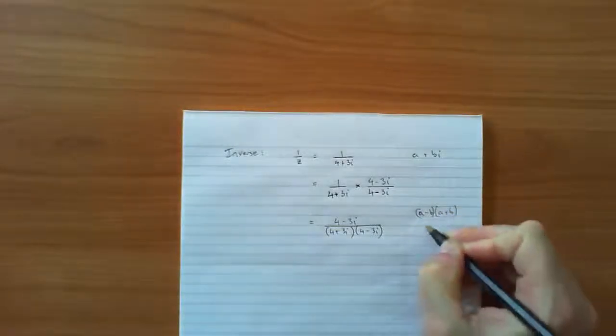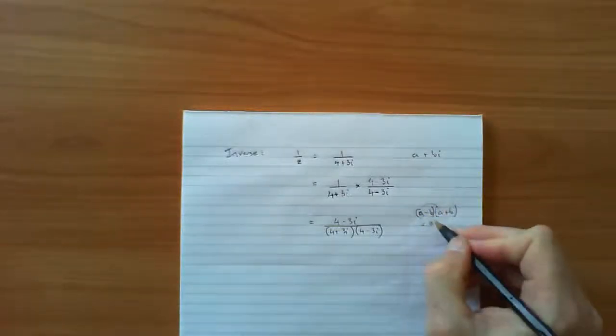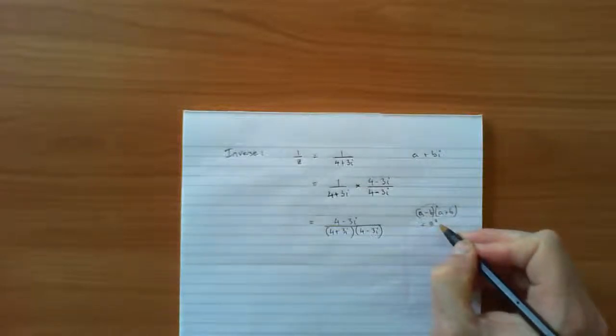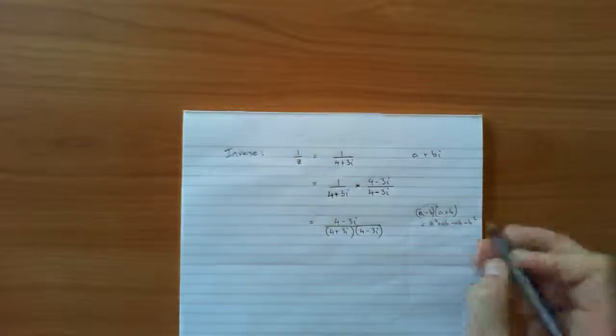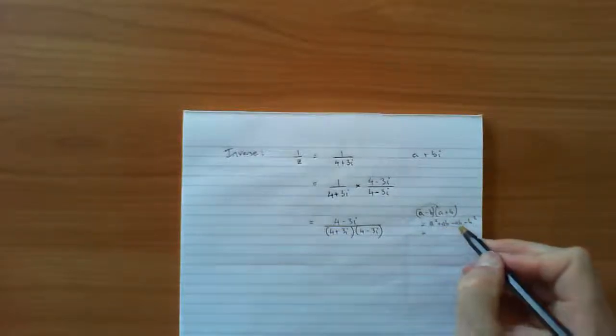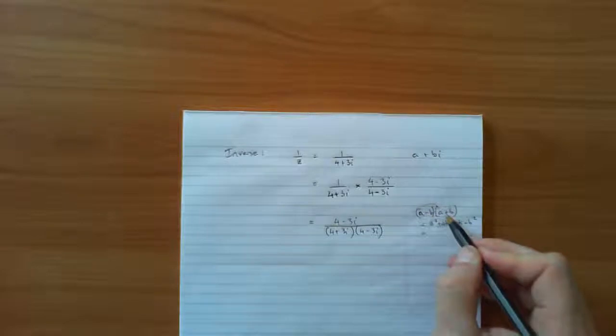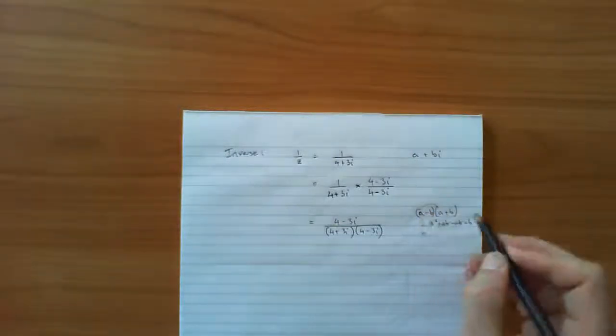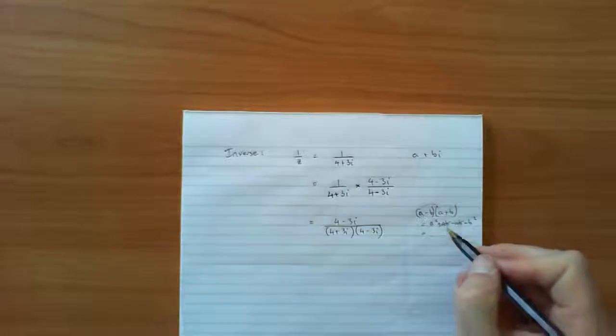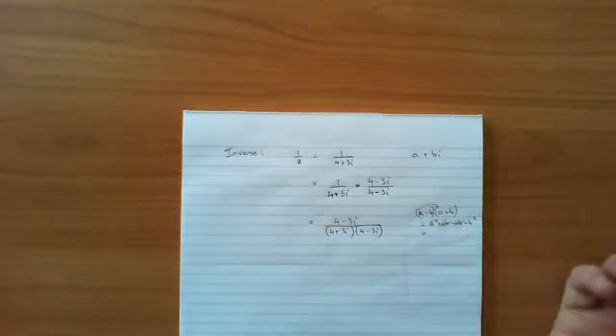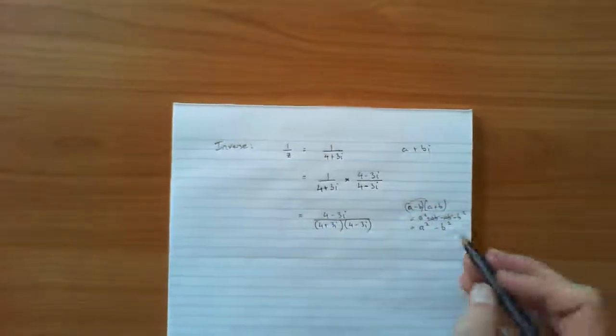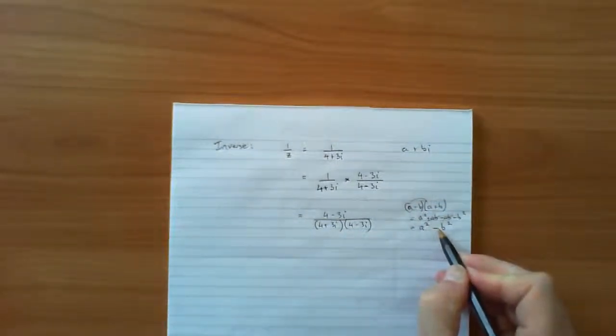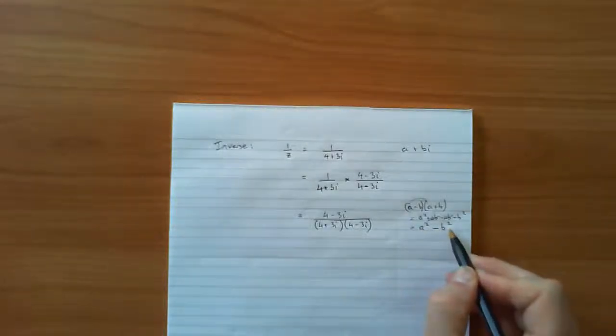If you actually expand this out the long way, you get a squared plus ab minus ab minus b squared. Now this ab and minus ab in the middle, because one's a minus and one's a plus, and everything else is identical, these two will always cancel each other out. Plus ab minus ab equals zero. So you're left with a squared minus b squared, which we call the difference, difference being negative, the difference of two squares, a squared minus b squared.